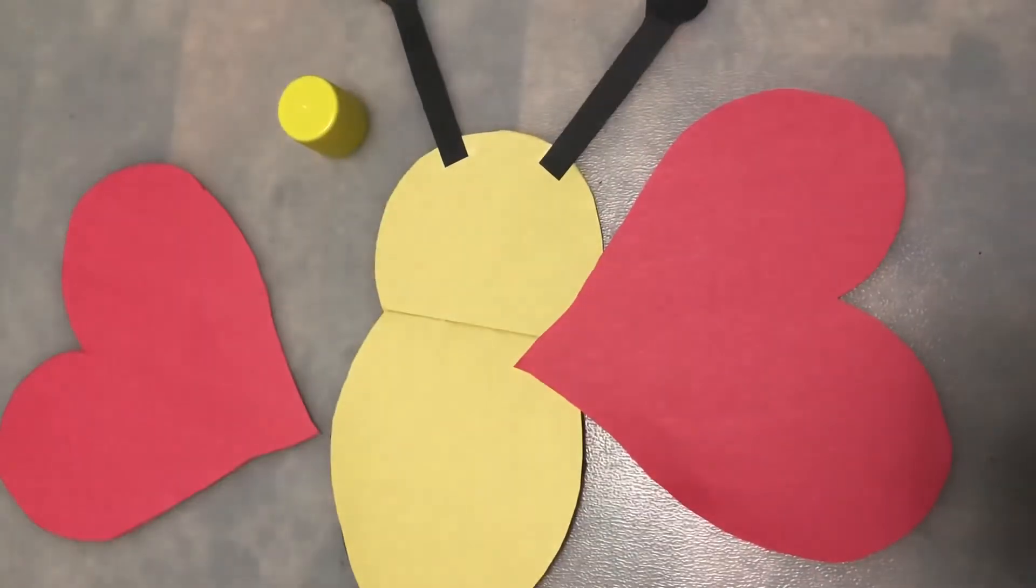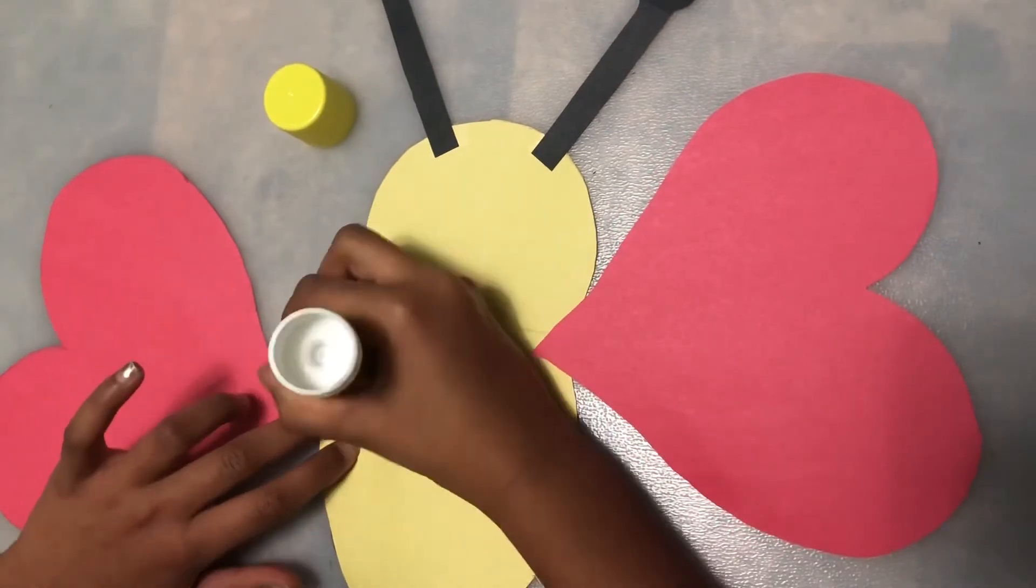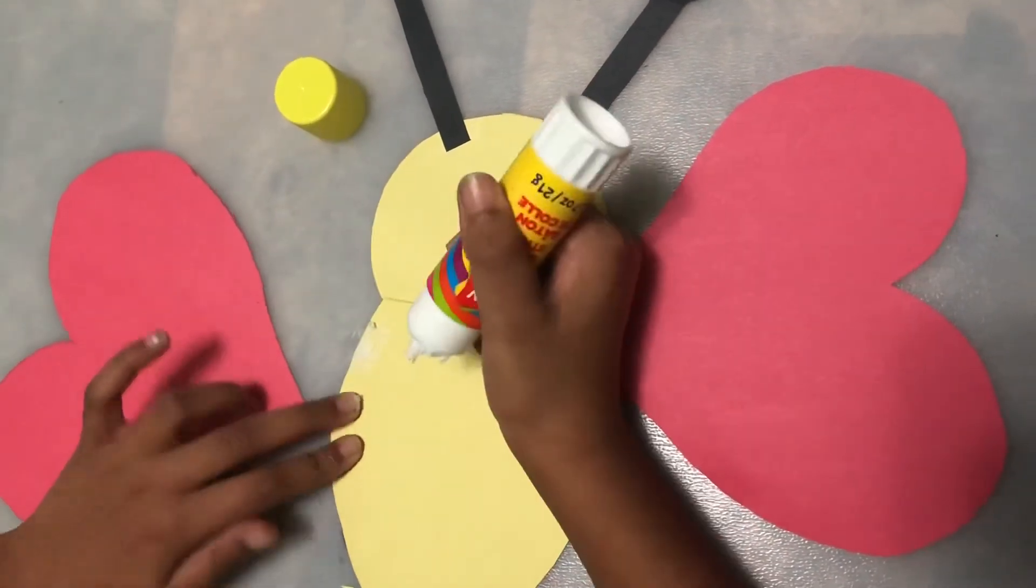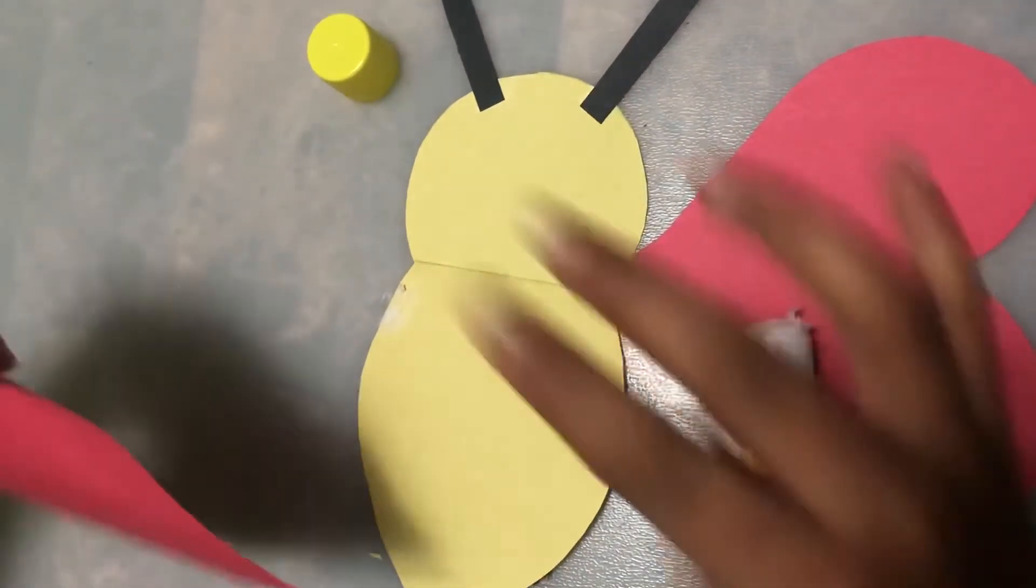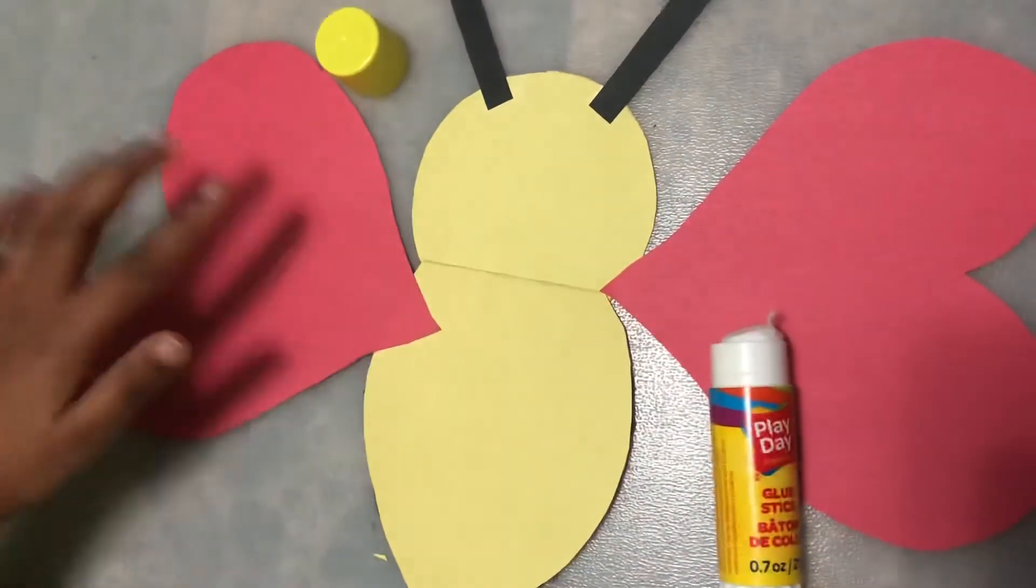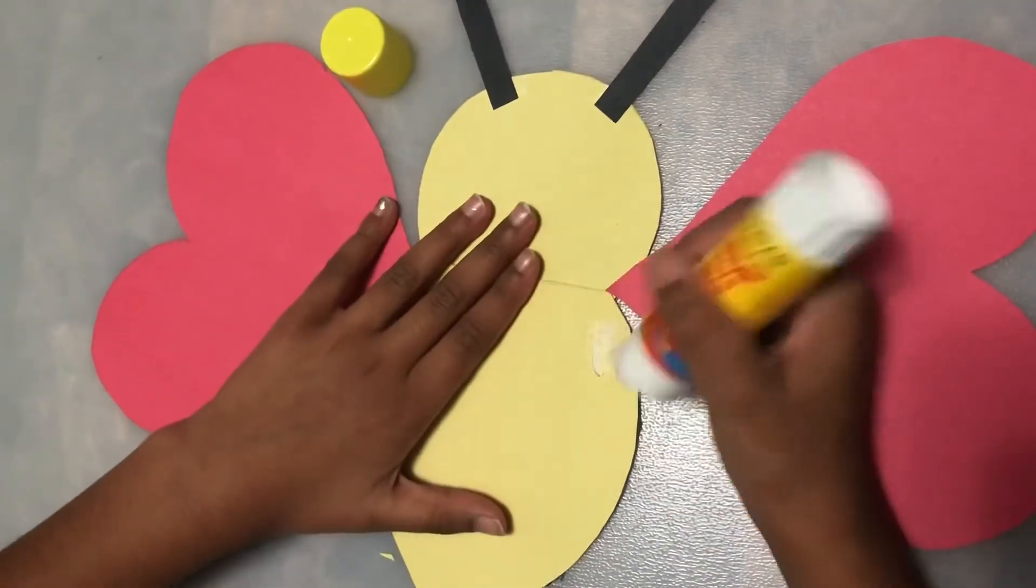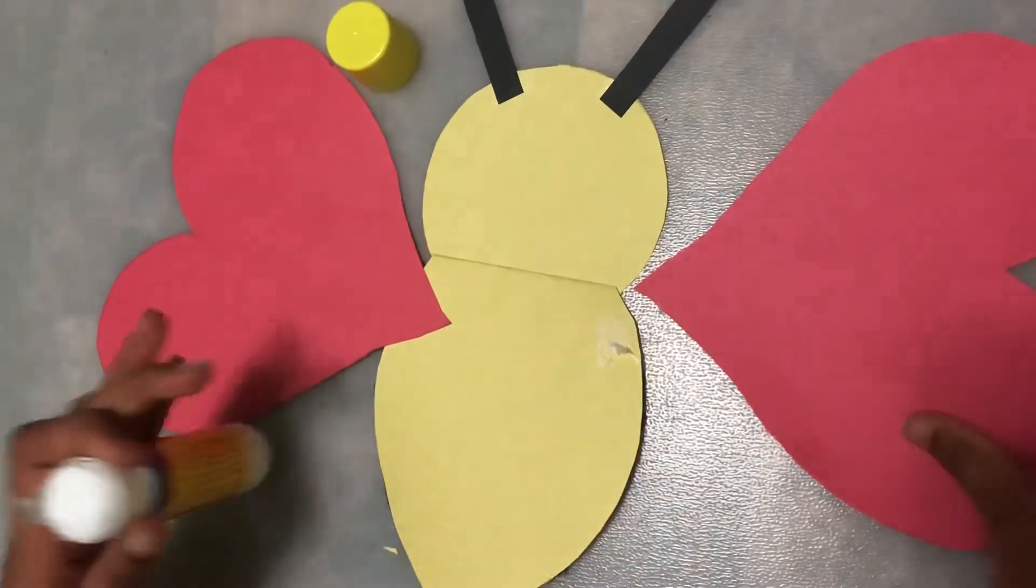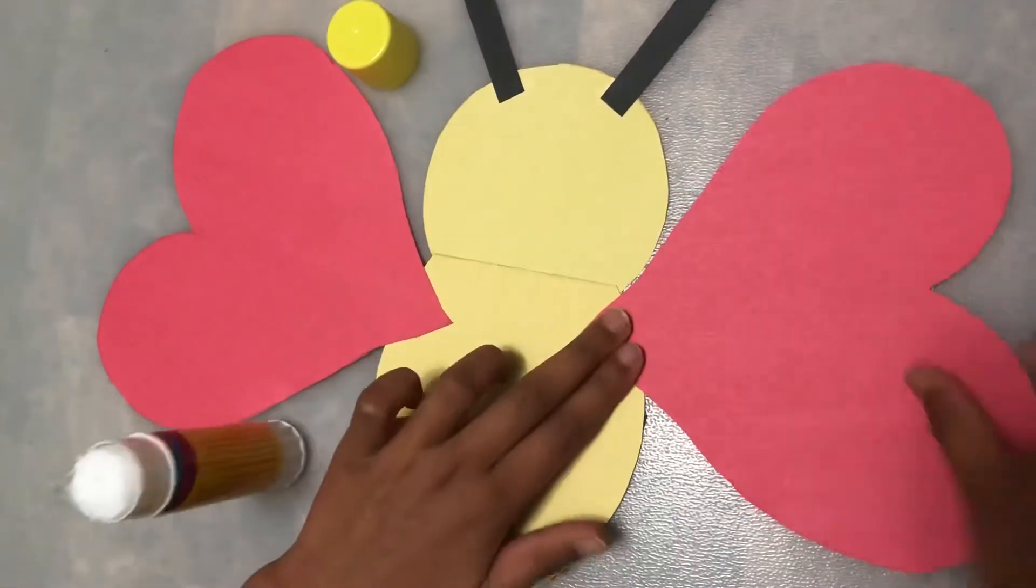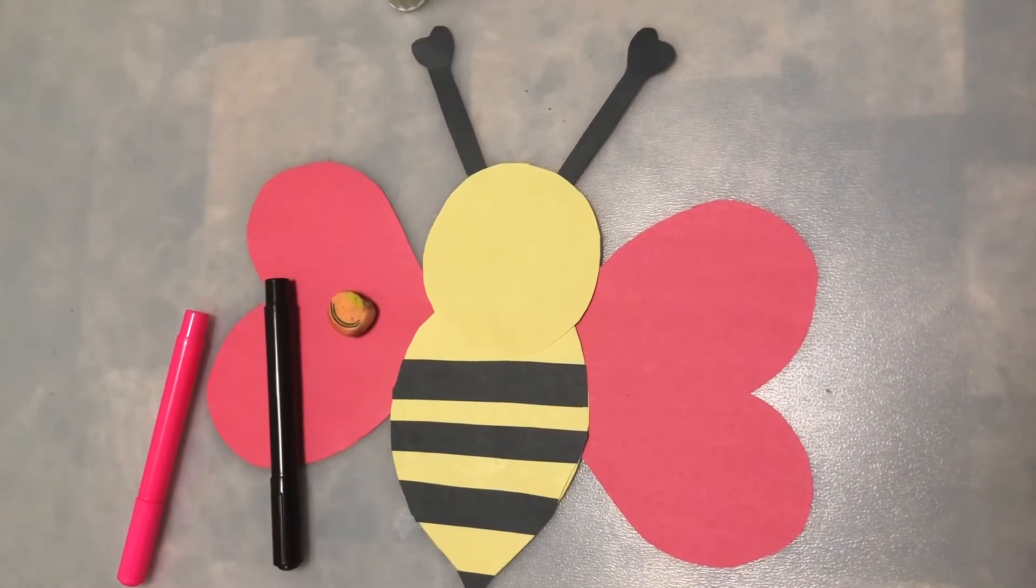I'm gonna glue the wings at the back of the bee. I'm gonna put a little glue right here and glue our wings like that and do the other. Here we go.